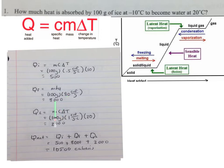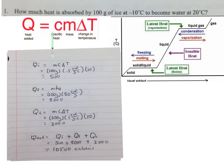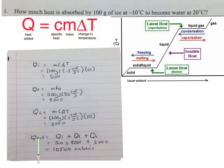We calculate Q sub F. Now we're at 0 degrees Celsius and the problem states we're moving to 20 degrees Celsius, so we have a 20 degree temperature change. For Q sub L: 100 grams times specific heat of water (1 calorie per gram degree Celsius) times 20 degrees. To get the total heat absorbed, we add Q sub I + Q sub F + Q sub L to get our answer.